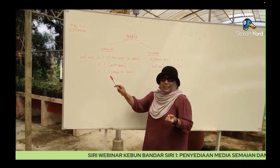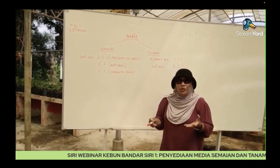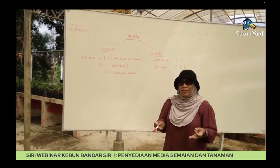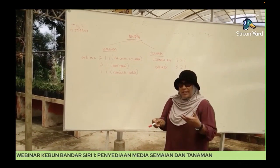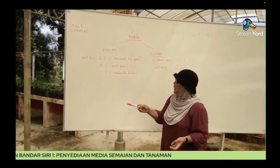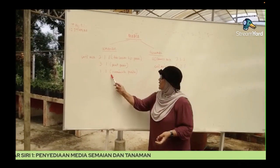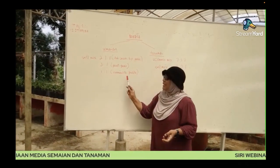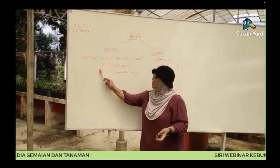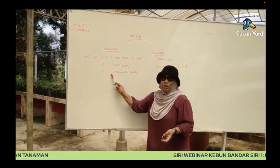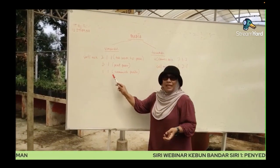Ataupun kalau untuk keratan — contoh keratan batang atau keratan daun — yang lebih bagus lagi, kita gunakan vermiculite dengan perlite dengan ratio vermiculite 1, perlite 1. Ratio ni bila kita tunjuk contoh 2:1:1, pertama adalah topsoil, kedua adalah organic matter, ketiga adalah pasir.